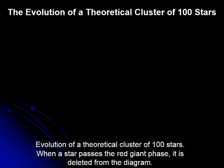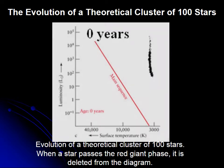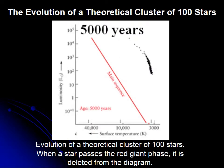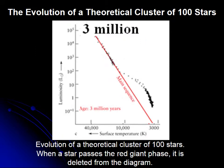This animation will show you the evolution of a theoretical cluster created just to demonstrate the effect. It contains 100 stars. They begin at the protostar phase, then move into pre-main sequence, then main sequence, and then start moving into the giant region. Initially the big ones are already on the main sequence while the little ones are still arriving.